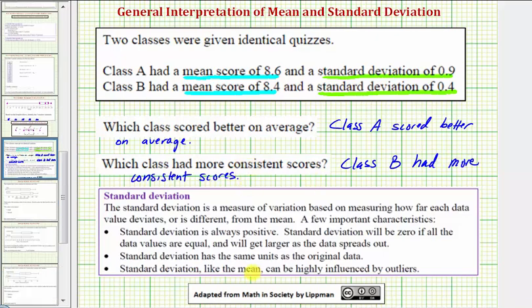So Class B had more consistent scores. And again, like the mean, the standard deviation is highly influenced by outliers, meaning very low scores or very high scores. I hope you found this helpful.